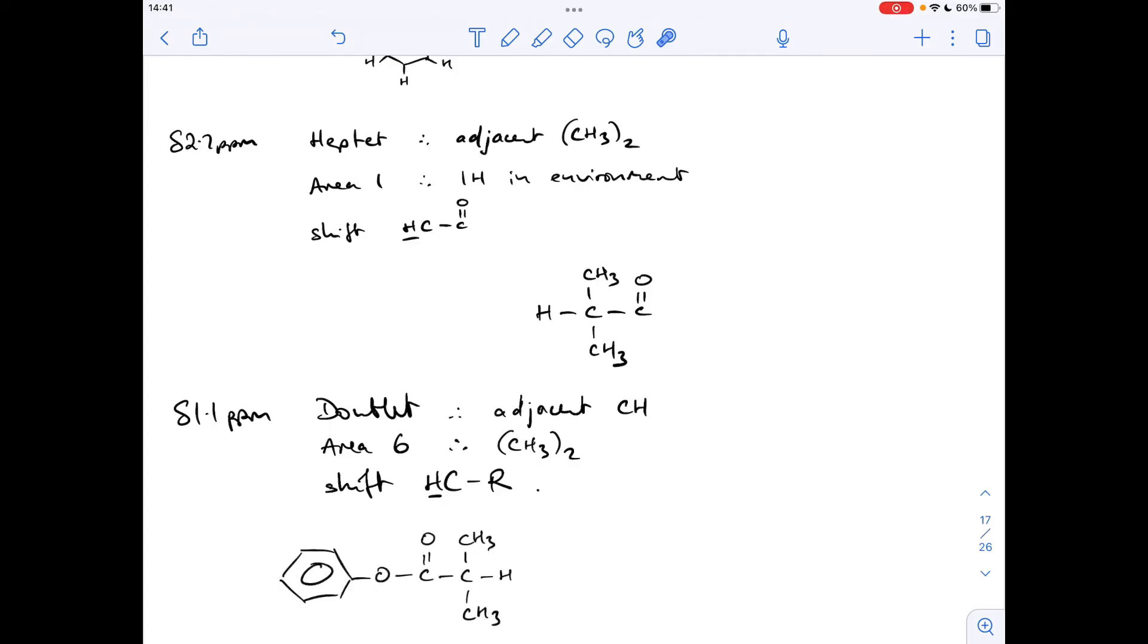So what we need to do now is just go back to that carbon-13 NMR information. Remember it said there were 7 signals in the carbon-13 NMR spectrum. So let's have a look at the carbon environment in this molecule, this ester. So we've got their equivalent: 1, 2, 3, 4, 5, they're equivalent, 6, they're equivalent, 7.